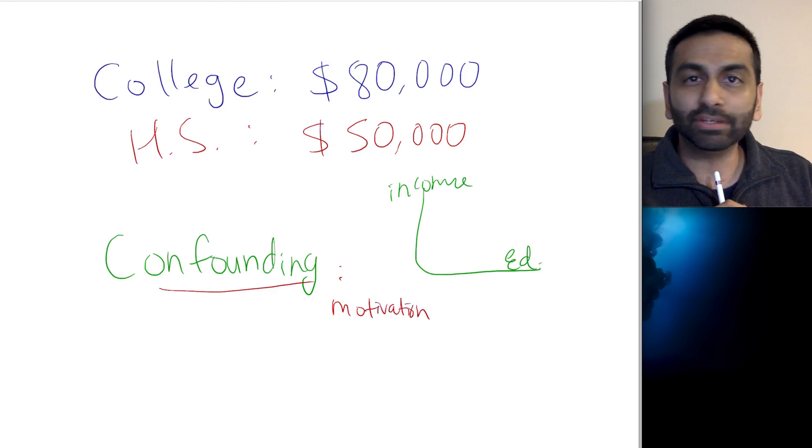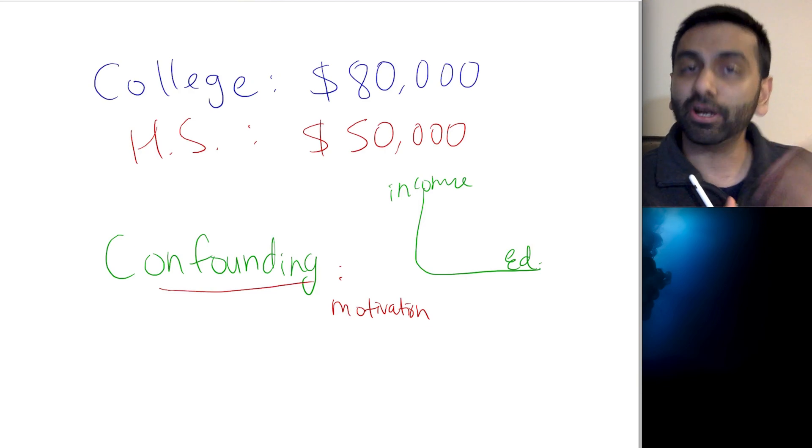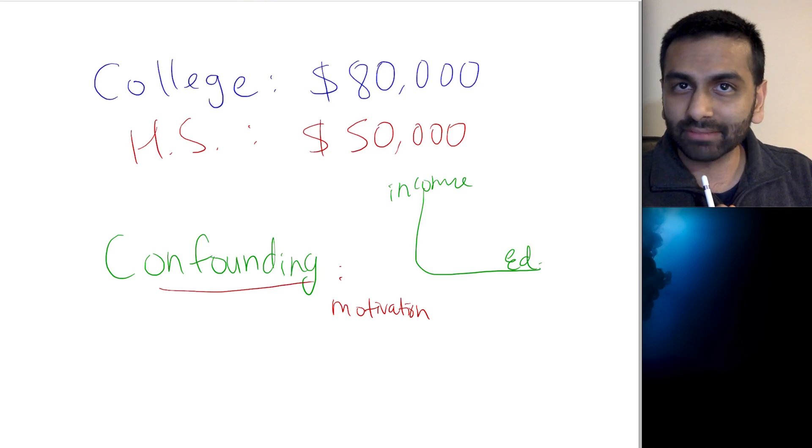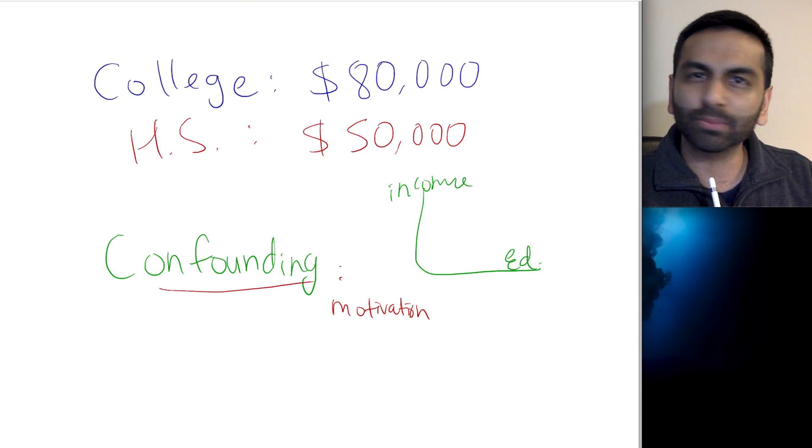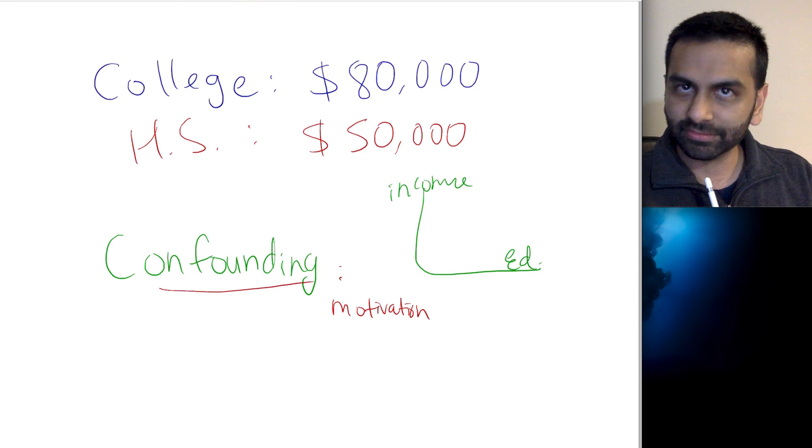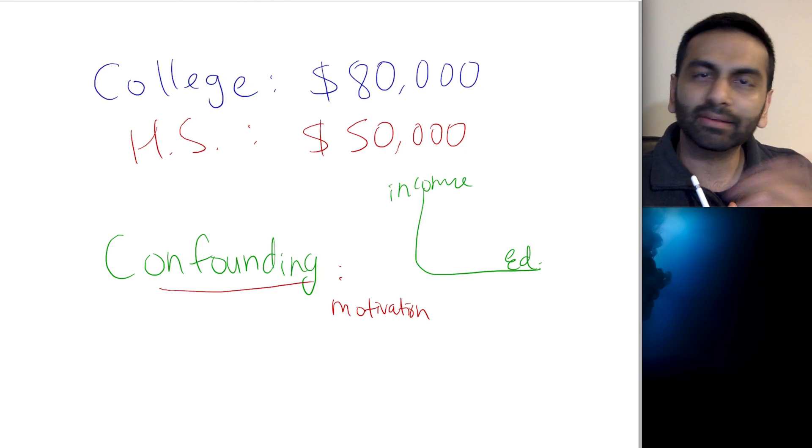But here's one confounding variable: motivation. What if you were to find out that the people who have college degrees, on average, have a higher motivation level? I mean, it's really tough, if not impossible, to measure motivation, but as a concept, suppose that we can all agree that this group of people are more motivated. And what if we also know, separately, that on average, all else equal, even for the same education level, more motivated people have higher salaries. Maybe their boss is recognizing it or they're being more productive. So, let's say we have those two facts established.